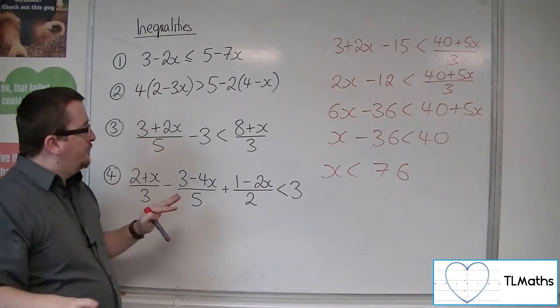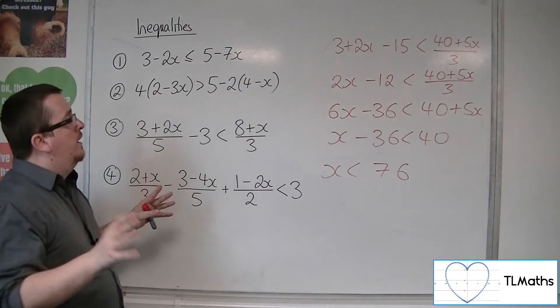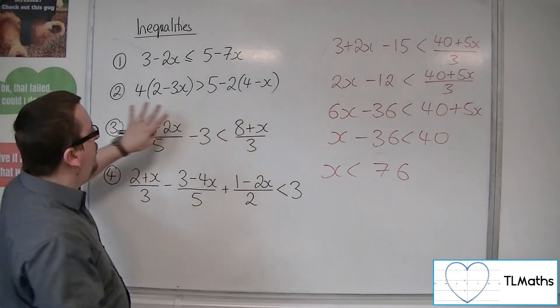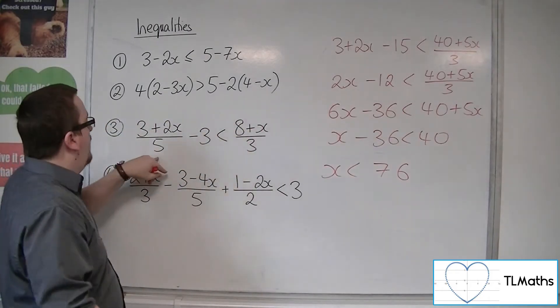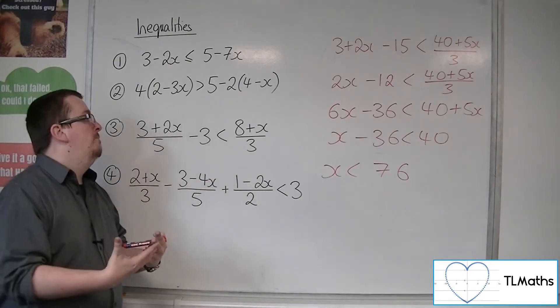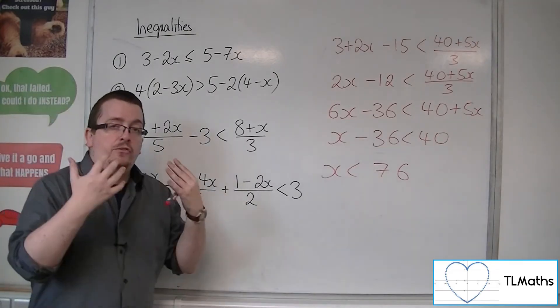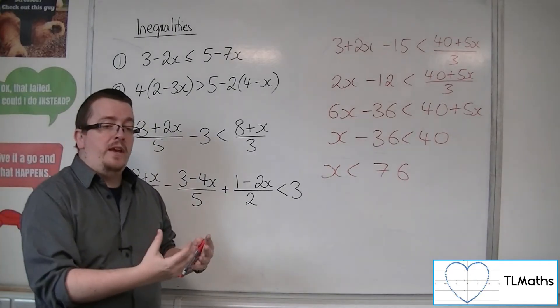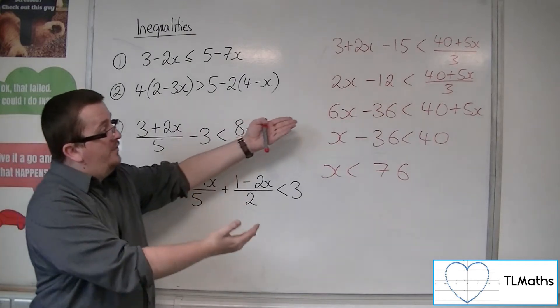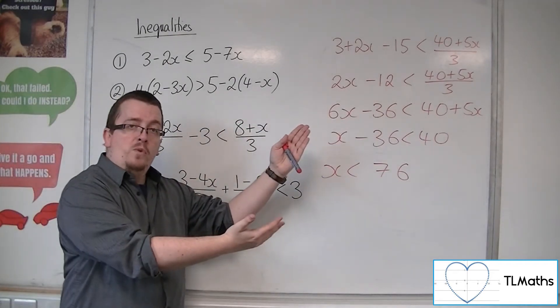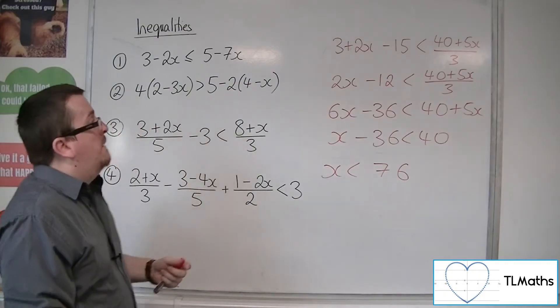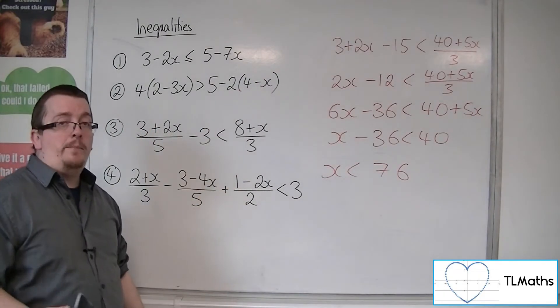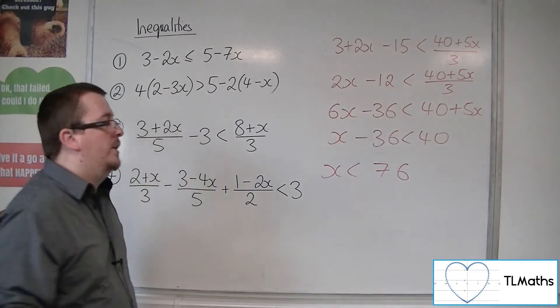Now, you could have done all the multiplication through in one step by multiplying both sides by 15, the 5 and the 3 combined. You can do it that way. It's really down to your confidence again about manipulating those fractions. If you want to do it step by step as I've done it, you're more than welcome. Personally, to keep track of everything, I would take a couple more steps just to make sure that I'm happy with what's going on.